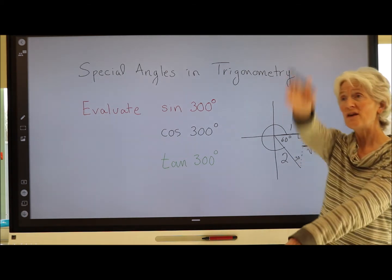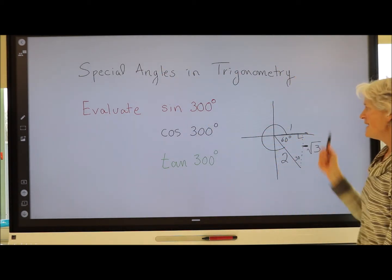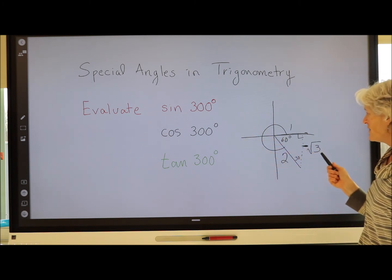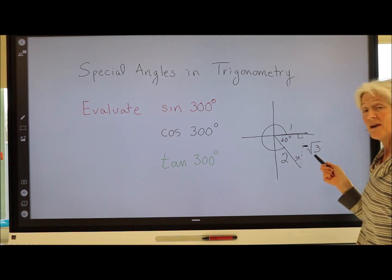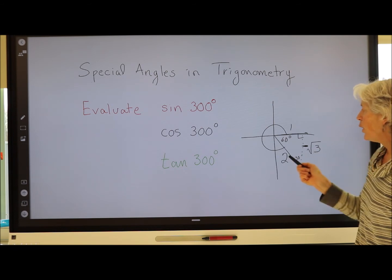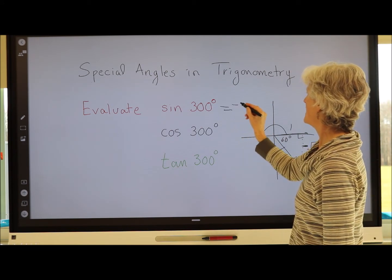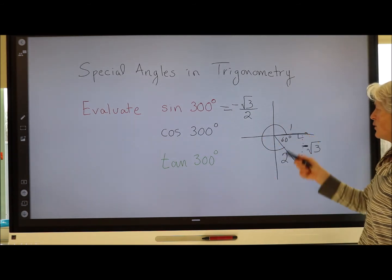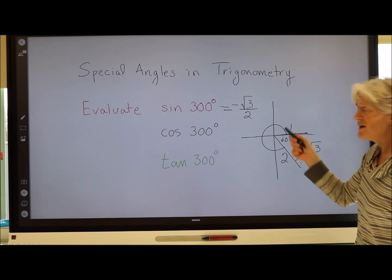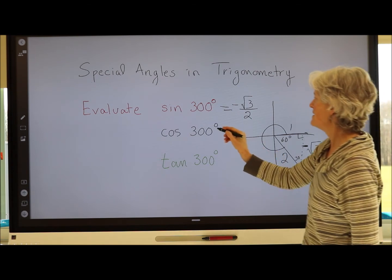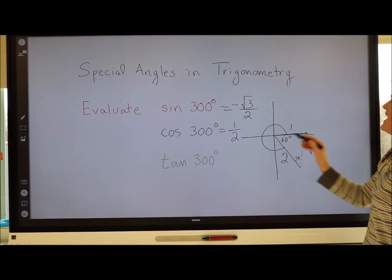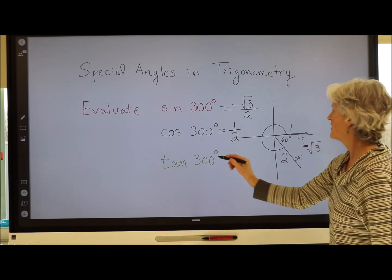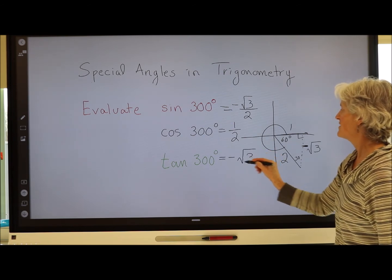The rotating arm is always positive — it's just length. So sin(300°) = y/rotating arm = −√3/2. Cos(300°) = x/rotating arm = 1/2. Tan(300°) = y/x = −√3/1 = −√3.